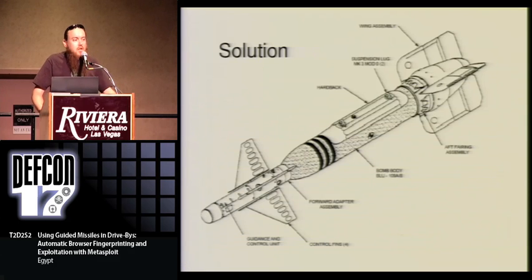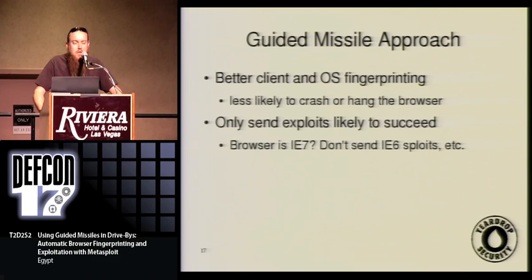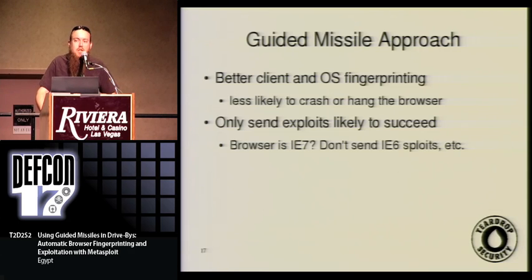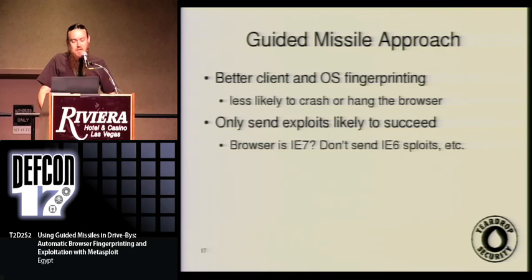The solution here is like a GBU Paveway Bunker Buster — a laser-guided missile. The first thing you need is to know what to point the laser at. You've got to know what the client is and what OS it's running. We use JavaScript fingerprinting to do all of that. Once we figure out what the target is, we're much less likely to crash or hang it, or get that stupid dialogue saying 'this script has been running too long.' So we only send exploits that are likely to succeed — it doesn't make sense to send Firefox exploits to IE, or IE6 exploits to IE7.